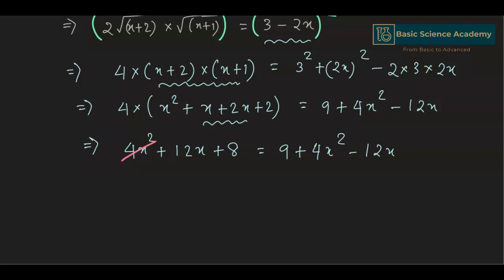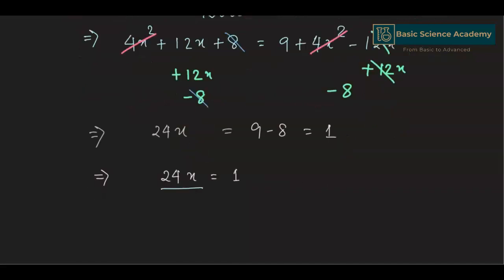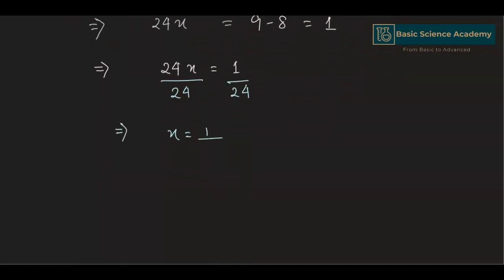Now the 4x squared terms from both sides cancel out. Adding 12x to both sides and subtracting 8 gives 24x equals 9 minus 8, which equals 1. Dividing both sides by 24 gives x equals 1/24. So this is our answer.